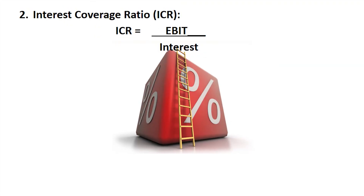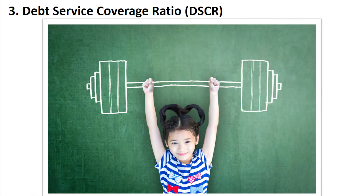Next is Interest Coverage Ratio (ICR). This is the number of times interest is covered by earnings before interest and tax (EBIT). The formula is: ICR = EBIT / Interest. EBIT is the profit before paying interest and tax, divided by the interest being paid. This is also a factor affecting capital structure.